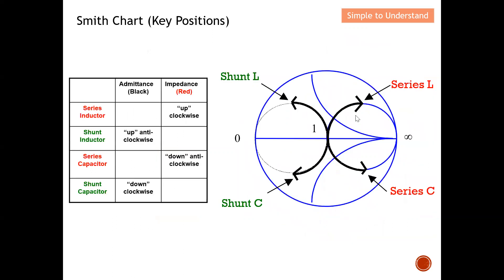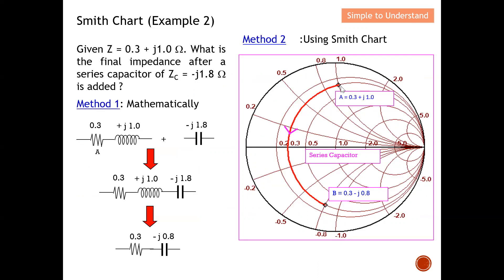To summarize: referring to the movement chart, for a series capacitor, you move down anti-clockwise by the value of the capacitor reactance. In this case, starting from 0.3 + j1.0 and moving down anti-clockwise by 1.8, I arrive at 0.3 - j0.8, which confirms the mathematical calculation. This is the method for adding a series capacitor to an impedance on the Smith chart.